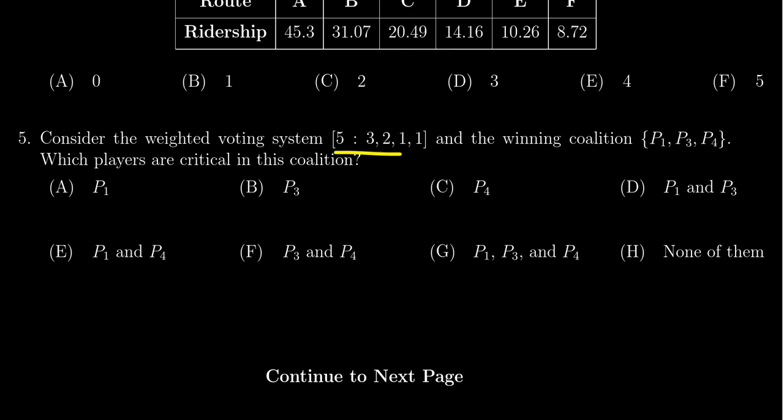We're given the following weighted voting system. We have a quota of five and we have four players whose weights are three, two, one and one. And we're given the winning coalition player one, player three, player four.